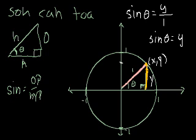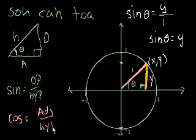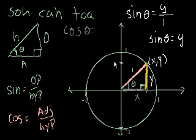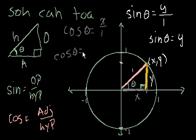Let's do the same thing for cosine of theta. Cosine is equal to adjacent over hypotenuse. The adjacent side is this bottom side here. If this point is (x, y), then this distance is x. So cosine of theta equals x over the hypotenuse, and once again the hypotenuse is 1. So cosine of theta is equal to x.